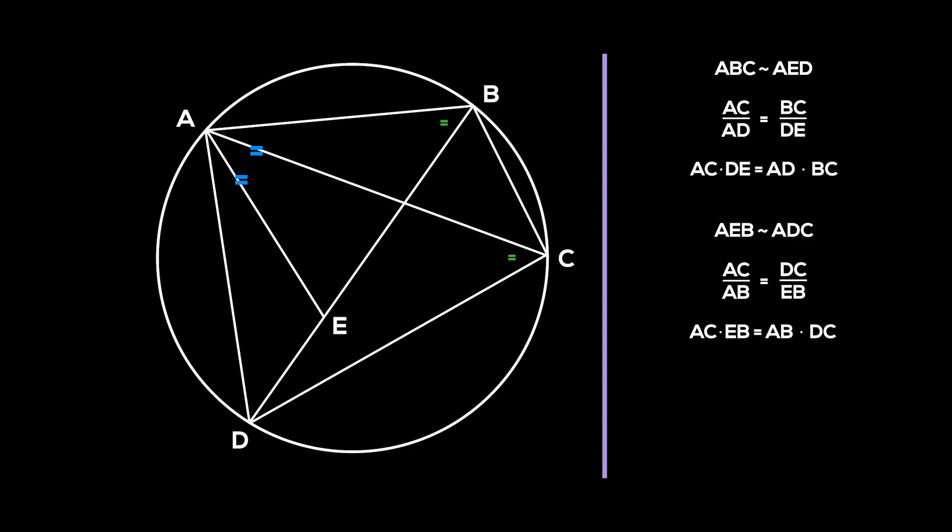Adding these two results, we get AC times DE plus AC times EB is equal to AD times BC plus AB times DC. In the left-hand side, we can factor out AC to get AC times DE plus EB. Since DE plus EB is exactly DB, we can rewrite it as such. Thus, the theorem has been proven.